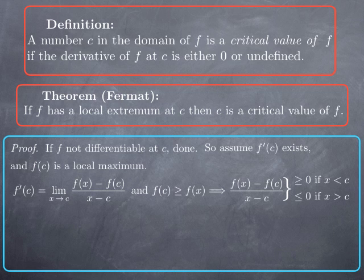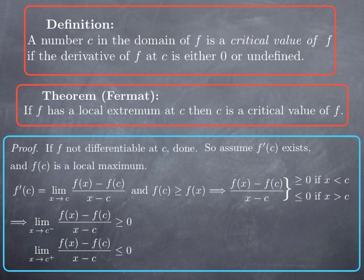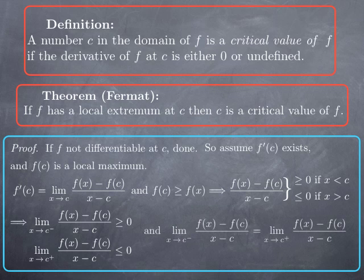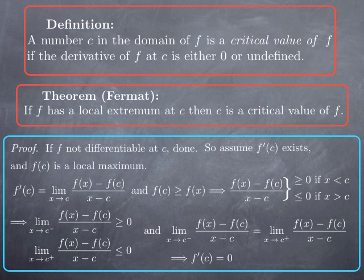When x approaches c from the left, this limit is a limit of positive numbers, and therefore is positive or 0. Similarly, the limit from the right is negative or 0. But these two one-sided limits must coincide because the regular limit exists. The only way a number that is negative or 0 equals a number that is positive or 0 is for both to equal 0. Therefore, the regular limit equals the two one-sided limits and is 0.